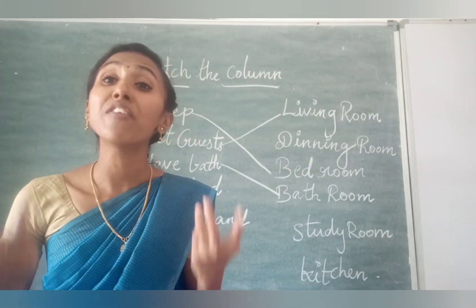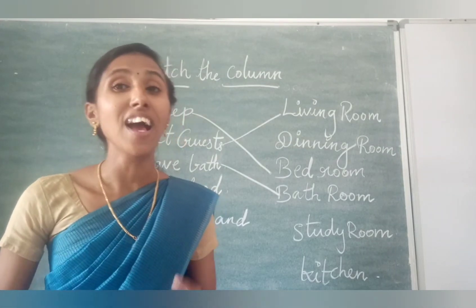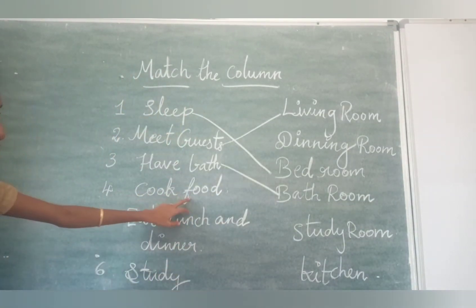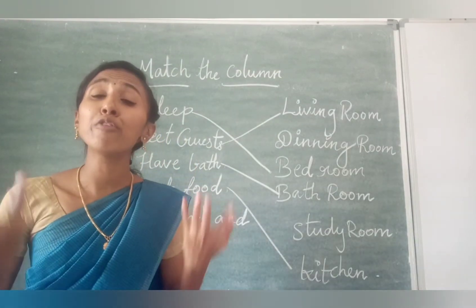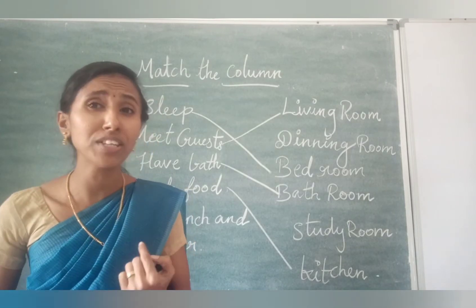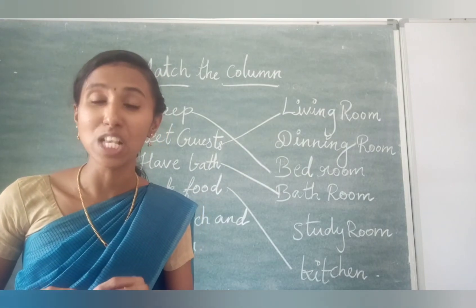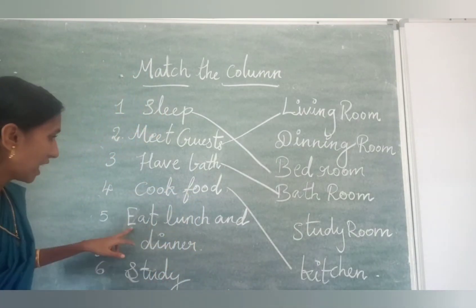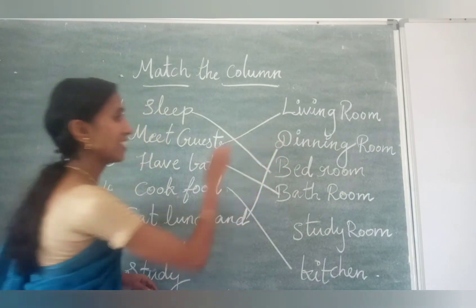Where does our mother cook food? In the kitchen, our mother cooks food. Cook food — Kitchen. Where do we eat our lunch and dinner? We eat our lunch and dinner in the dining room. Eat lunch and dinner — Dining room.